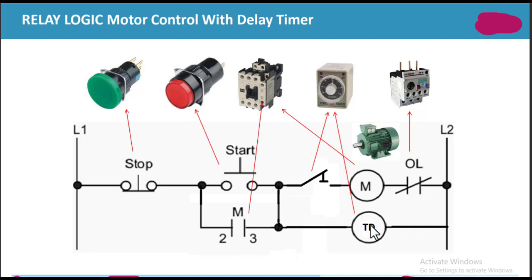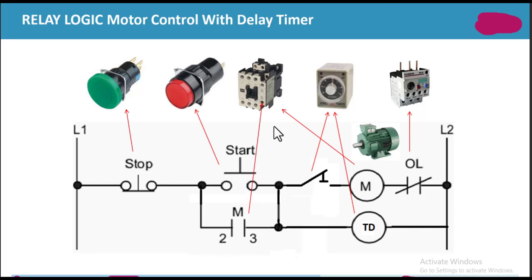The timer will count its set time — for example, 50 seconds or 40 seconds. After the dedicated time, its coil will be energized and its contact will be closed. Current can then flow through to the motor, and the motor will turn on. The motor is connected with this contactor, and when current passes through it, the contactor will be energized.